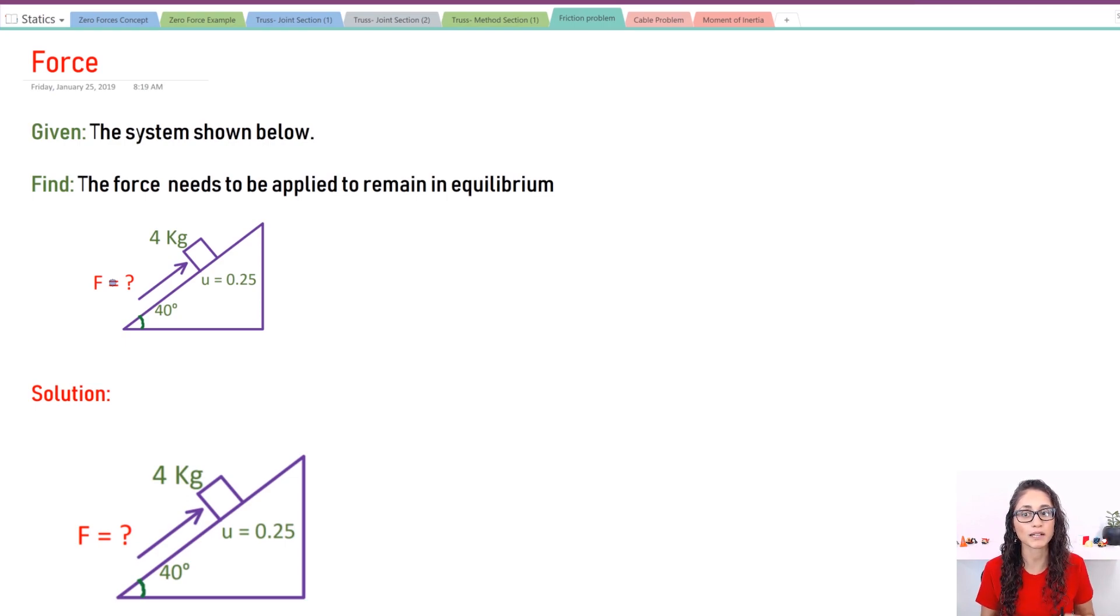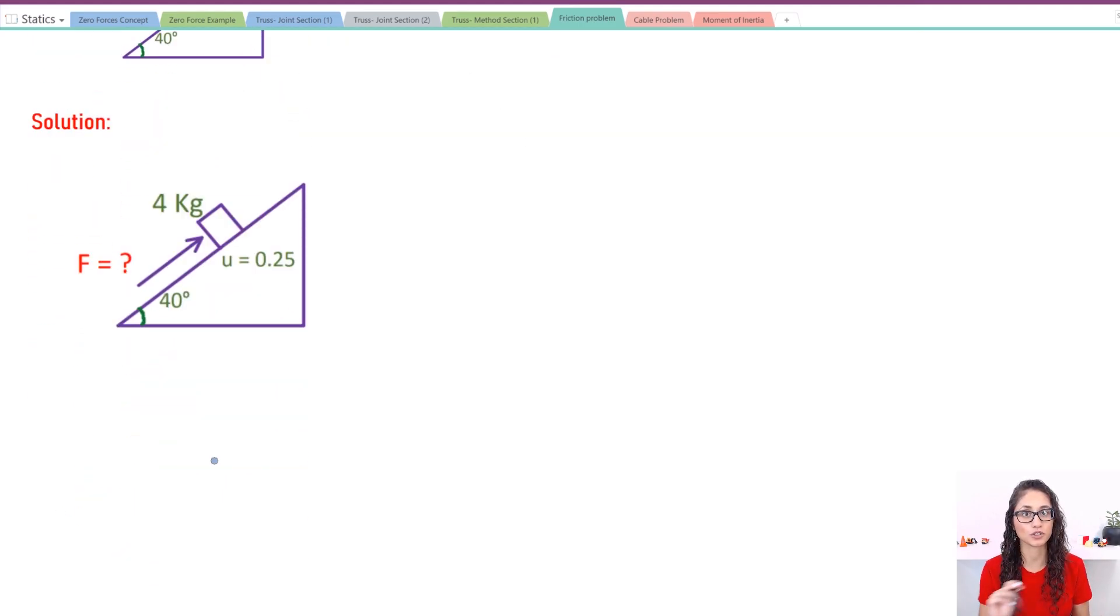Another thing that I would like you to keep in mind is sometimes you will be given this problem but it won't be in equilibrium. The block would be moving and in that case you will have dynamics. So your equilibrium equations, the summation of the forces of X and Y equals to zero, no longer applies to those problems. In that case you're going to use Newton's second law which is summation of the forces equals to ma. I'll make sure to cover a problem like that in the future but I just want you to keep that in mind. Okay so let's first start with drawing our forces and then draw the free body diagram and then after that we're going to set up our equilibrium equations and then we're going to start solving.